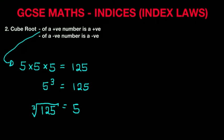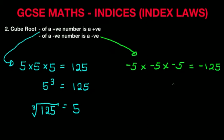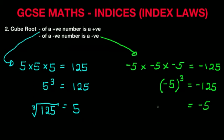Now let's work on the negative. Suppose we have minus 5 times minus 5 times minus 5. The answer to this is minus 125. To simplify it, minus 5 to the power of 3 equals minus 125. So the cube root of minus 125 equals minus 5. Remember the rule: the cube root of a positive number is positive, and the cube root of a negative number is negative.